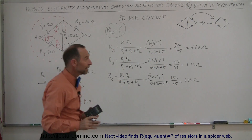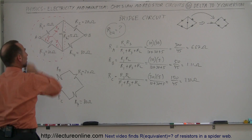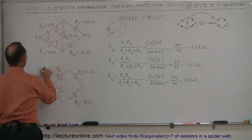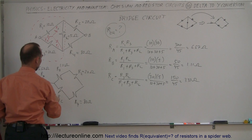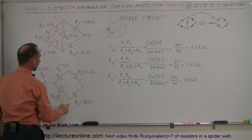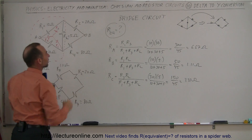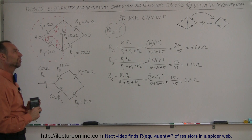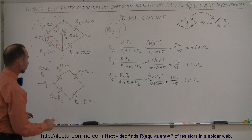Now we have the resistors of the Y instead of the delta. So RA becomes a 6.67-ohm resistor, RB becomes a 1.11-ohm resistor, and RC becomes a 3.33-ohm resistor. Now all we have to do is solve this circuit, and that will give us the equivalent resistance. It's almost like magic — I really like this. I was in junior college when someone showed me that and it was just like, wow, that is neat. Let's find the final answer.